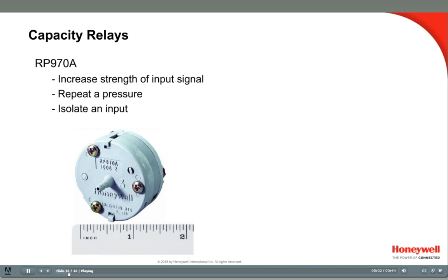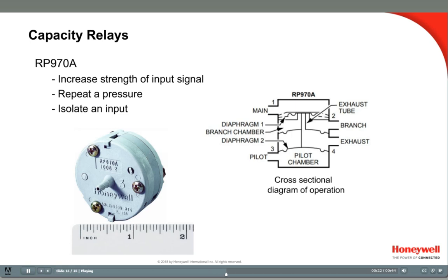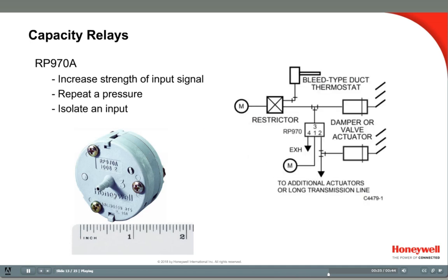The capacity relay has several applications. It's often used to strengthen a signal over a long tubing run, or to assist a controller in filling a large actuator or bank of actuators from a single controller output. This relay can also be used to repeat a signal or to isolate a signal from a pneumatic circuit. Port 3 is connected to the pilot circuit that triggers the relay, port 1 goes to the main air supply, and port 2 is the strengthened relayed signal that goes to the damper or actuator. In this example, port 3 is connected to a branch line from a thermostat, and port 2 is connected to the damper at the end of a long run.